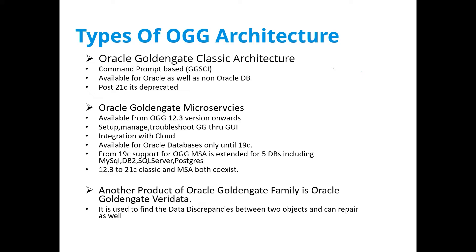GGSCI has been available since GoldenGate's initial days. Until 2017 it was just called Oracle GoldenGate; in 2017 Oracle renamed it to Classic Architecture — meaning the traditional architecture. Classic architecture is a command-prompt-based, GGSCI-based architecture available for both Oracle as well as non-Oracle databases. GGSCI stands for GoldenGate Software Command Line Interface. Remember: 21c is the last version where classic architecture is available; post 21c, classic architecture has been deprecated.